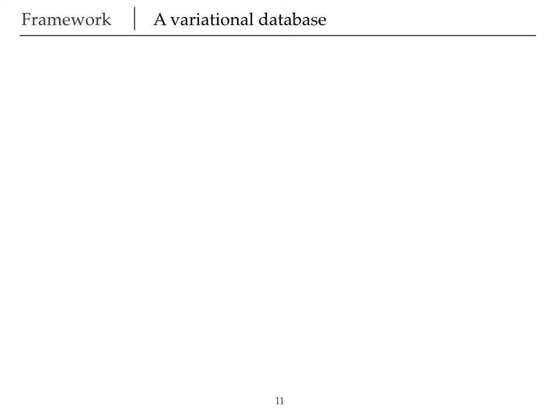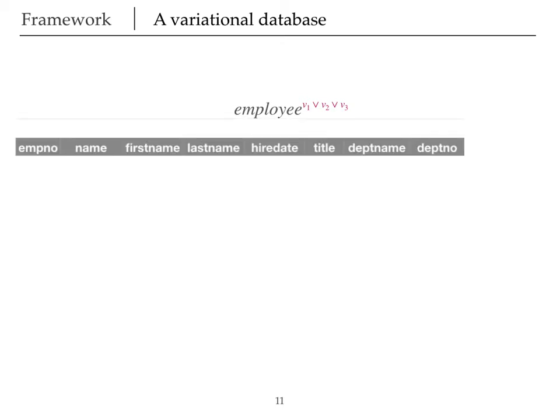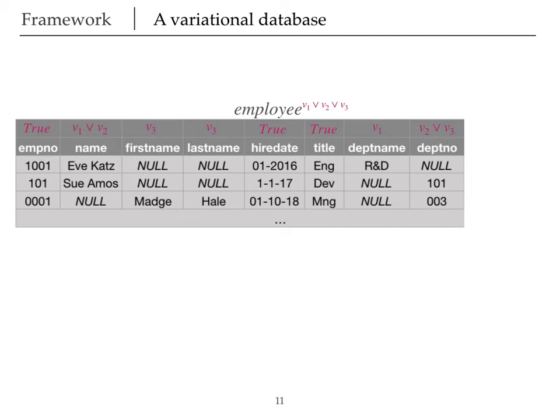Let's see a variational database in practice and let's go back to our running example. So we have the employee relation and remember that we had three versions of it. So we tag this relation with the feature expression v1 or v2 or v3 to indicate that it only exists if one of these features are enabled. Then we have all the attributes that could appear in this relation. Remember, this is the part that our databases are sharing. So now we also tag them with feature expressions to indicate what database they belong to. And then we have our data. But wait, we also need to know where each tuple is coming from. So we add an attribute called presenceCondition shown as pressCond, which is always present and that is captured by the true tag that it has. And we add the feature expression of our tuples that indicate what tuple belongs to which database.